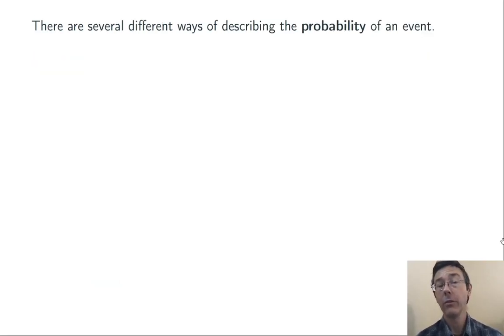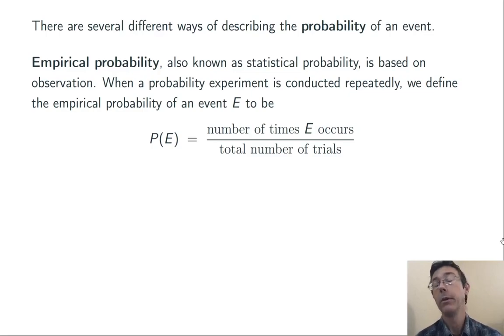Now, there are actually several different ways of describing the probability of an event, all of which we're responsible for. First is empirical probability, or statistical probability. And that's probability just based on observation. Basically, we run a probability experiment over and over again. We count the number of times that the event occurs, and divide by the total number of times that we ran the probability experiment.